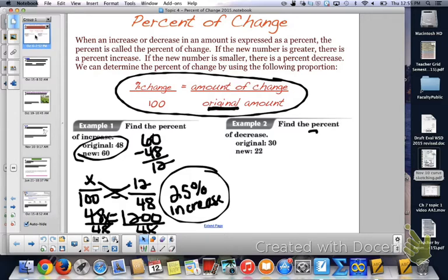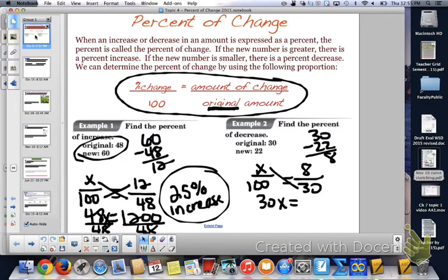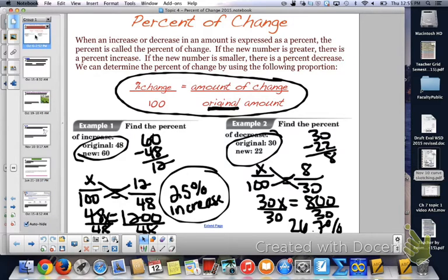Example 2: from 30 to 22. The amount of change is 8. So 8 over the original, which is 30, equals x over 100. When we cross-multiply, 30x equals 8 times 100, which is 800. Then 800 divided by 30 is 26.6%. We'll round that to 26.7%. Since the new number went down from the original, it's a 26.7% decrease.